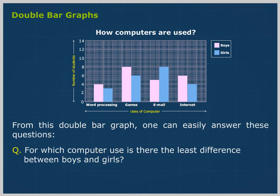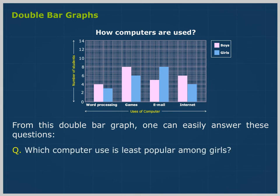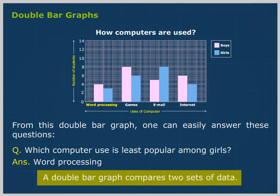For which computer use is there the least difference between boys and girls? Word processing. Which computer use is least popular among girls? Word processing. A double bar graph compares two sets of data.